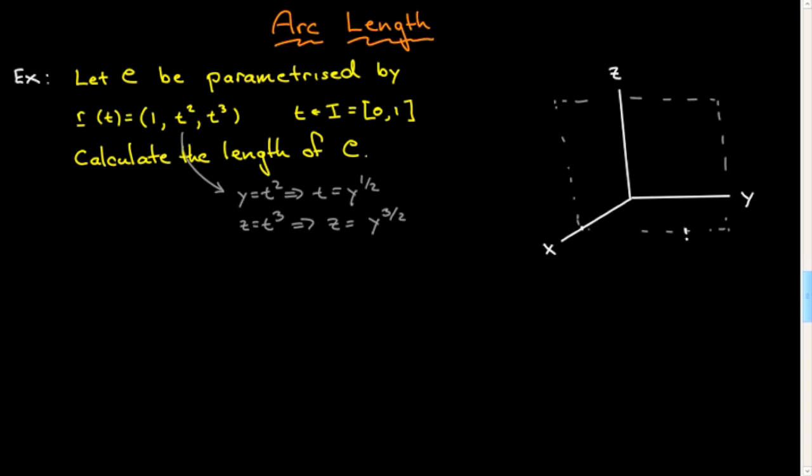If we take that to be one unit length and one unit length, then the curve will go through this point here. We'll start here. Anyway, so that's the curve. It's probably not too bad. If that's c, we want to compute its length.